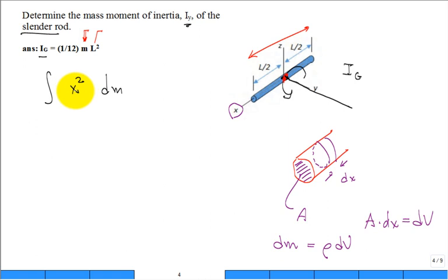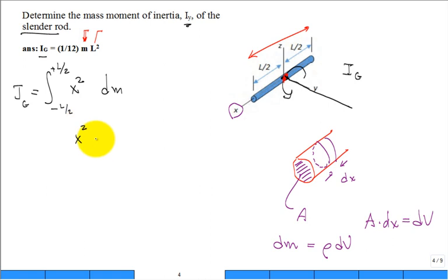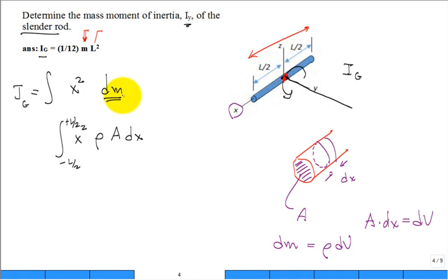That's really X squared. So I sub G is equal to the integral of X squared DM. We're going to integrate from negative L over 2 to positive L over 2. This DM we just worked out as rho A DX, integrating from negative L over 2 to positive L over 2. Once I get the mass in terms of DX, then I put in my limits in terms of X. The rho can come outside, the area can come outside, and I have the integral of X squared DX.